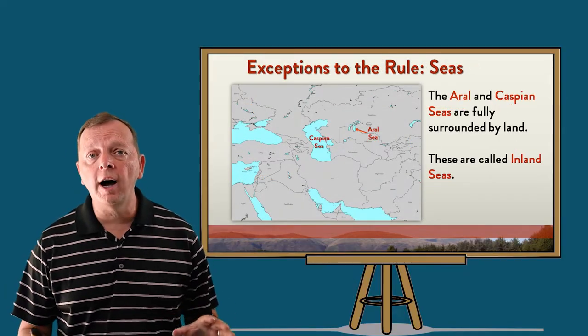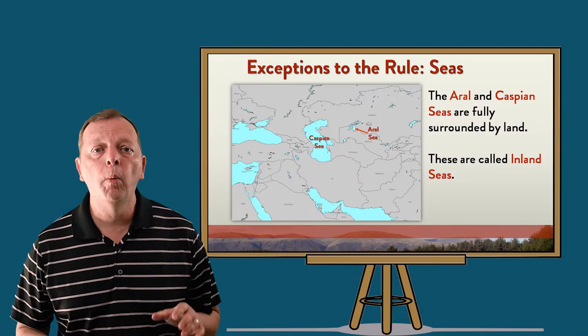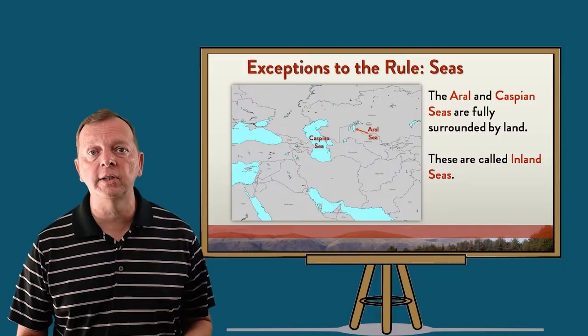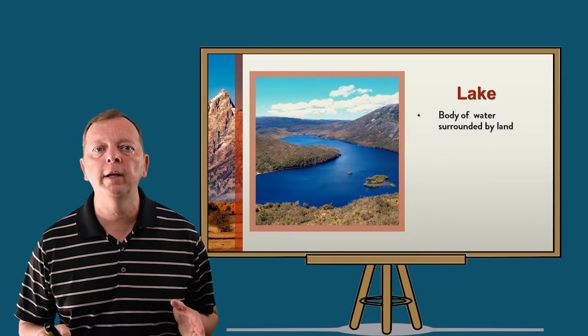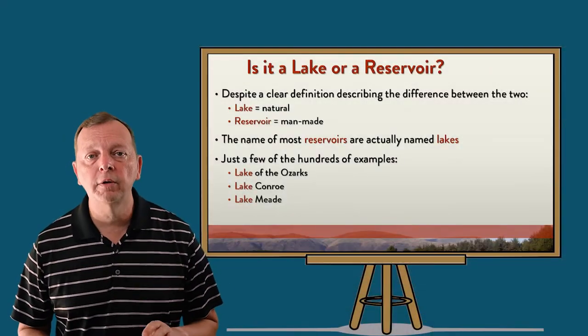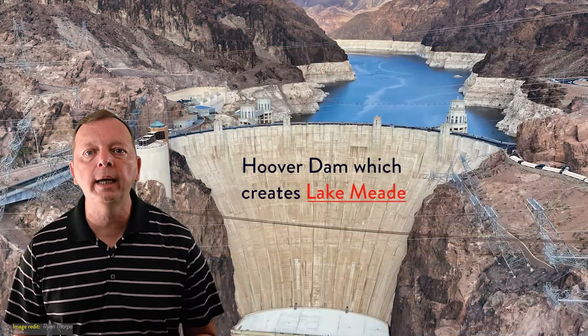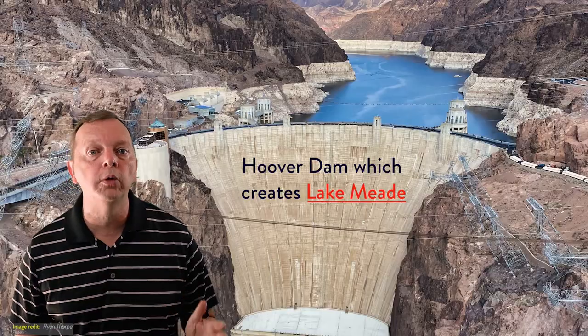By the way, the Caspian Sea is often argued to be a lake instead of a sea — I'll explain this debate when we talk about Central Asia later in this course. Many people believe the Caspian Sea is a lake because a lake is a large body of water entirely surrounded by land. So what's the difference between a lake and a reservoir? A reservoir is a man-made lake created by building a dam on a river — the dam holds back the water, which then becomes the reservoir. Although commonly the names of reservoirs are called lakes, such as Missouri's Lake of the Ozarks, Lake Conroe near Houston, or Lake Mead in Nevada and Arizona, which was created by the Hoover Dam.